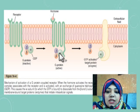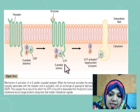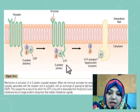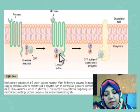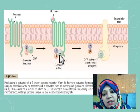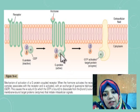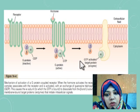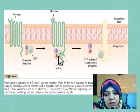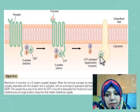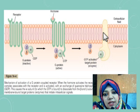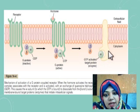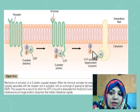So two things are happening: the G protein binds with the cytoplasmic tail of the receptor, and G protein exchanges GDP for GTP. When GTP is attached to the alpha subunit, the alpha subunit dissociates from the other two subunits. The alpha subunit then goes and binds with another protein — an intracellular enzyme, which is the adenylyl cyclase enzyme.